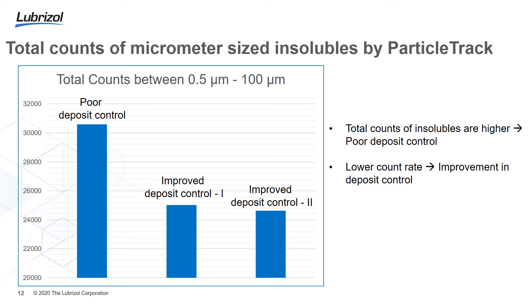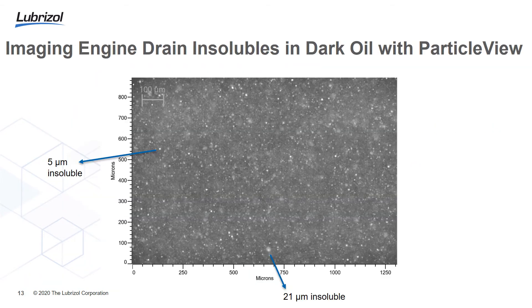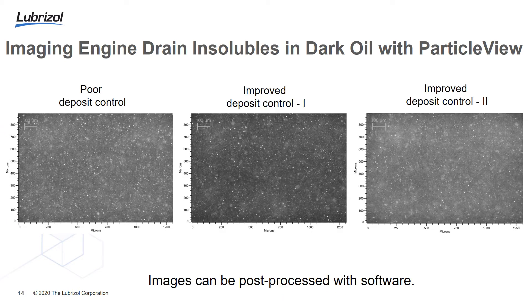Using ParticleView, we can look directly at those aggregates in dark drain oil. White spots are aggregated particles, and they are everywhere due to high contamination — for example, some 5-micrometer and 21-micrometer insoluble particles are visible. Looking at all three oils with different deposit control performance as snapshot images during dynamic image acquisition, the measurements are in agreement with ParticleTrack results. Images can also be post-processed with software for further analysis.